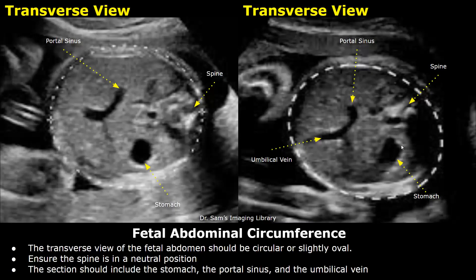The transverse view of the fetal abdomen should be circular or slightly oval in shape. Based on the fetal position, the spine can be seen in a three o'clock position, six o'clock, or nine o'clock, and sometimes in a twelve o'clock position.